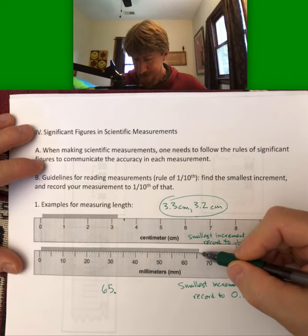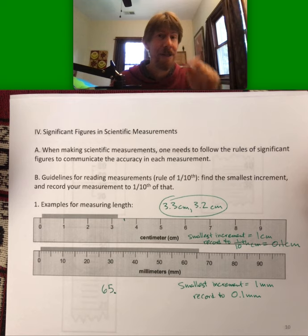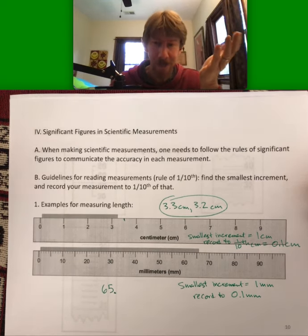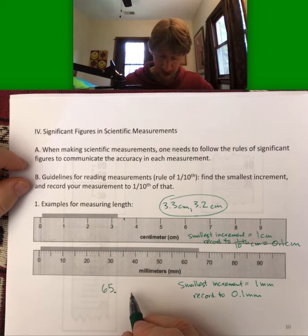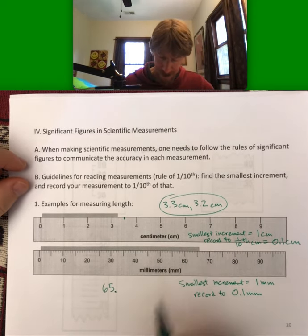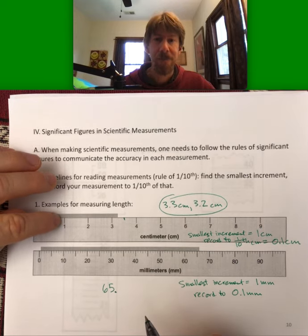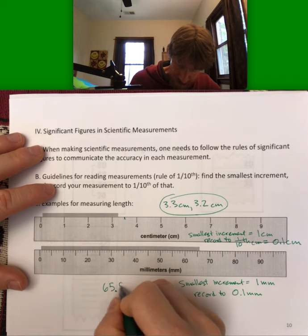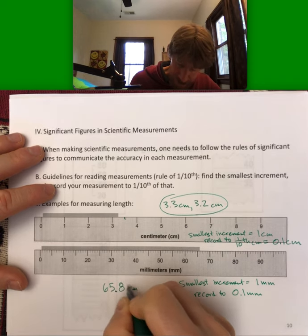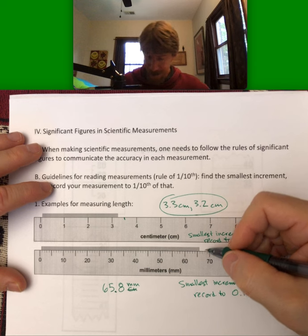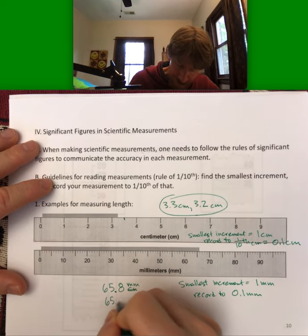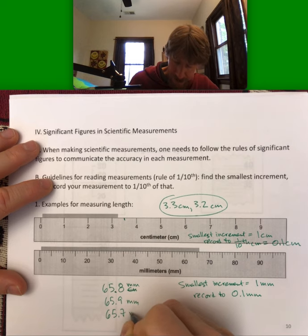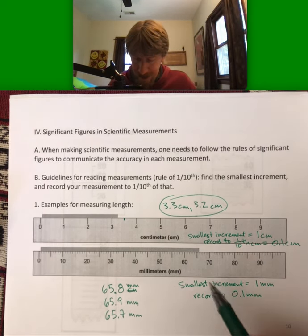And for this one, the spacing is getting a little hard to see. So there may be slightly more error, although overall, this is going to be much more accurate because it's got smaller markings than the ruler up here. But it might be, so I'm going to say 65.8 millimeters. Could be 65.9, 65.7.